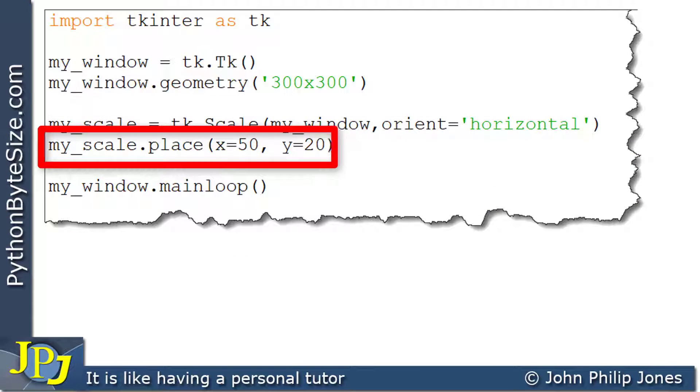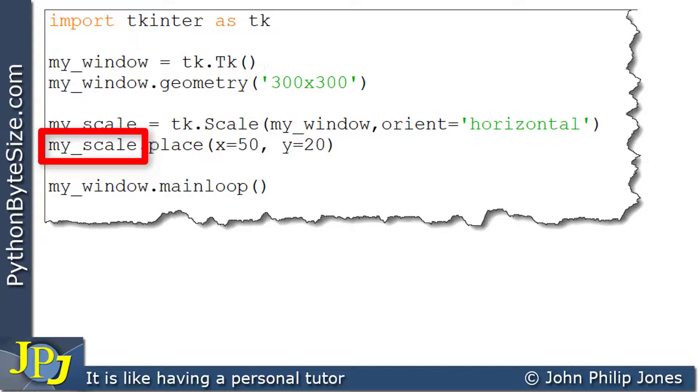This program statement refers to the scale widget we created, but on this line we've also got the invoking of this method called place. We haven't seen this before in the playlist, but what you can see we're doing is passing into the place method x=50 and y=20, and these are the x and y coordinates that will be used to position the scale within the window.